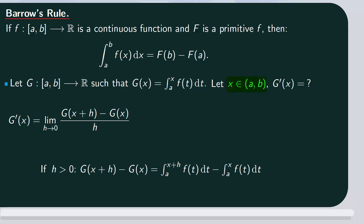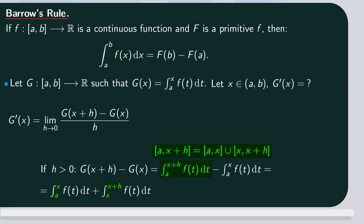For g(x+h), we substitute x+h for x in g. This is the integral between a and x+h of f(t) dt, and then we have minus g(x), which is the integral between a and x of f(t) dt. Now, x is a value between a and x+h. So the interval [a, x+h] can be expressed as a union of the intervals [a, x] and [x, x+h]. The first integral is expressed as the sum of two integrals: the integral between a and x plus the integral between x and x+h. Taking away the integral between a and x of f(t) dt, these two elements cancel, and we're left with the integral between x and x+h of f(t) dt.